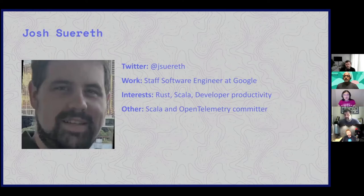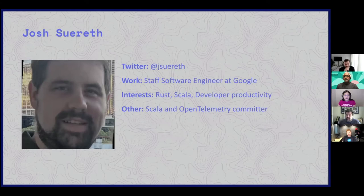Hi, I'm Josh Surrett. I'm working at Google Cloud and I'm responsible for telemetry collection within Google. At heart, I'm a programming language nerd — I love Rust, I love Scala, I love esoteric languages and really interesting things. I really care about developer productivity, and that's why I'm into observability. I'm an OpenTelemetry technical committee member and maintain a lot of observability components.